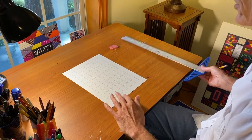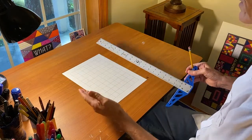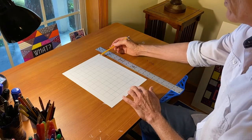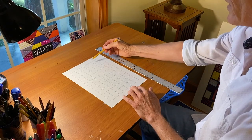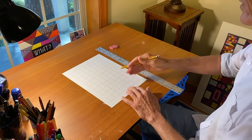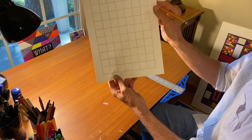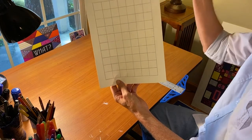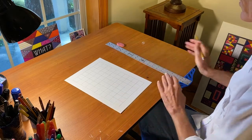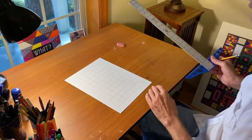I begin by using a pencil and a t-square to create a grid on the paper. What I've done here is to create a one-inch margin around the paper, and then I fill in the middle with a grid of vertical and horizontal lines that create these little one-inch squares. If you don't have a t-square, a simple ruler works just as well.